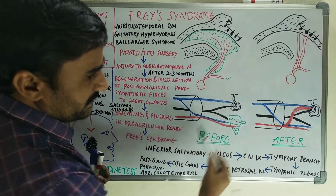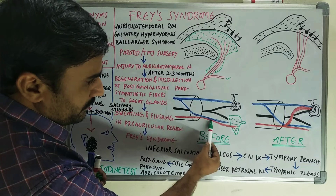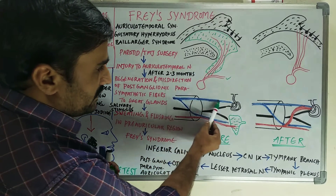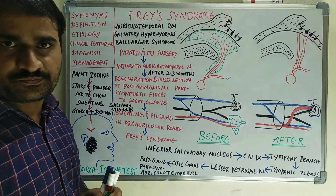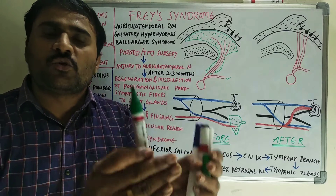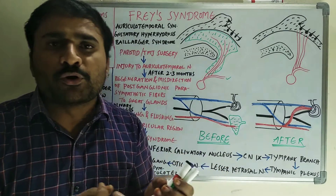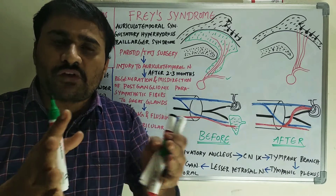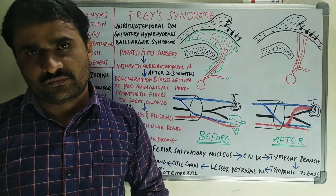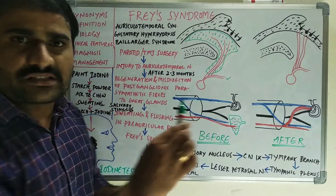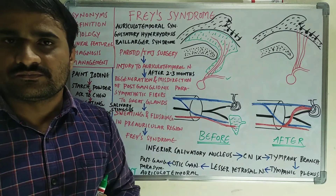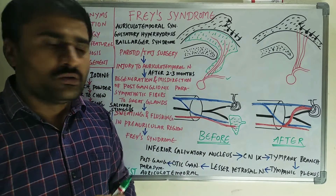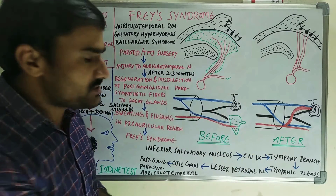This is the sweat gland and this is the parotid gland. The red colored ones are the parasympathetic nerve fibers and the blue colored ones are the sympathetic nerve fibers. The parasympathetic fibers are the secretomotor — on salivary stimulation they produce more saliva. The sympathetic nerve fibers are the vasomotor — they produce vasodilation and increased blood supply to that area. These sympathetic fibers supply both the sweat glands and the parotid gland. The sensory innervation through the auriculotemporal nerve is for both sweat glands and the parotid gland.